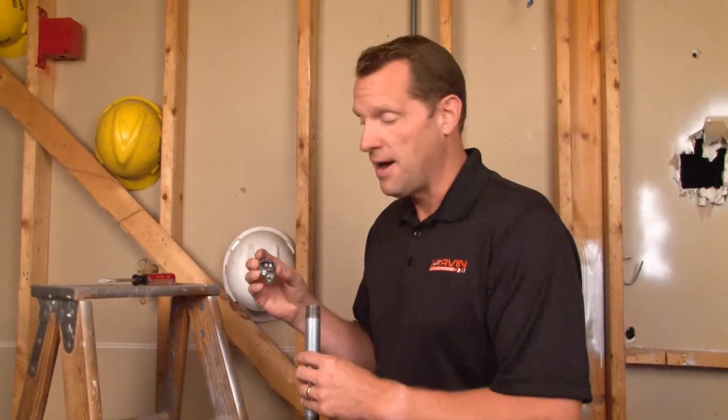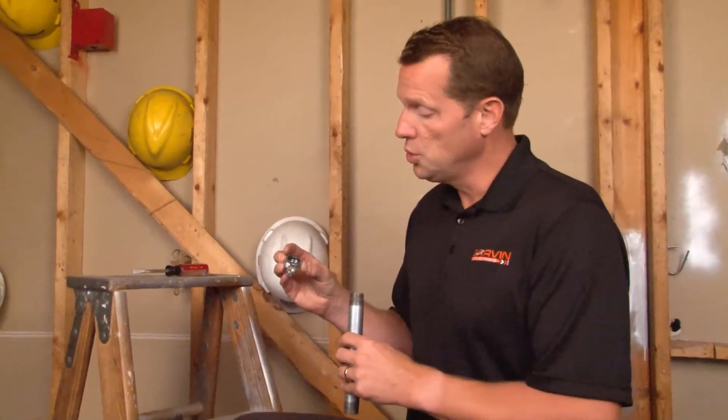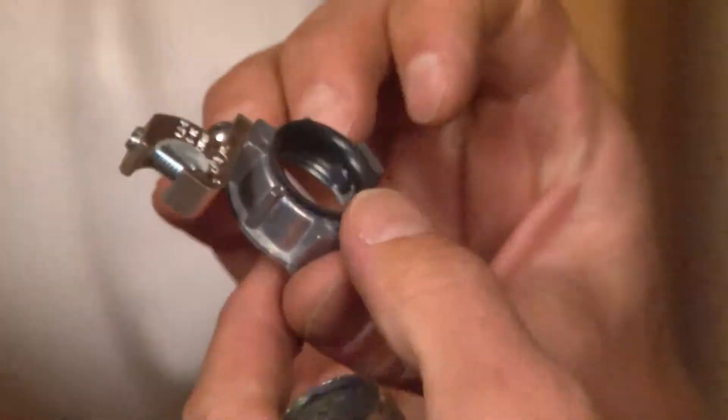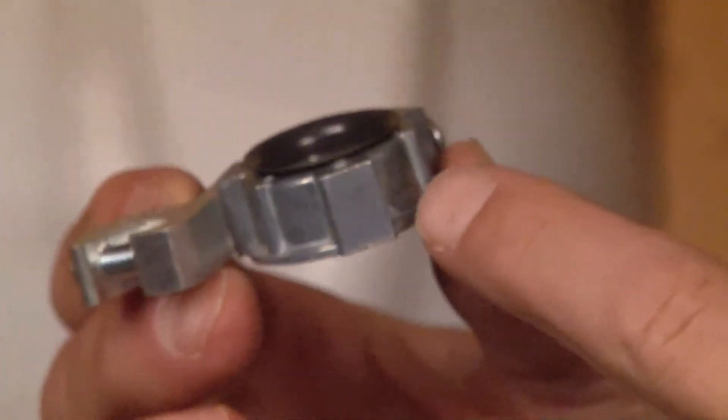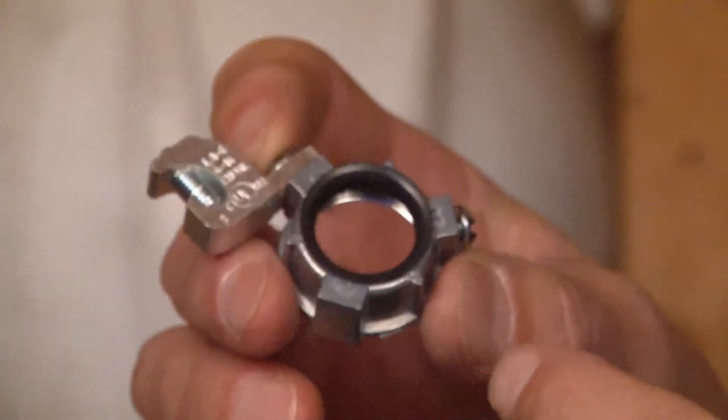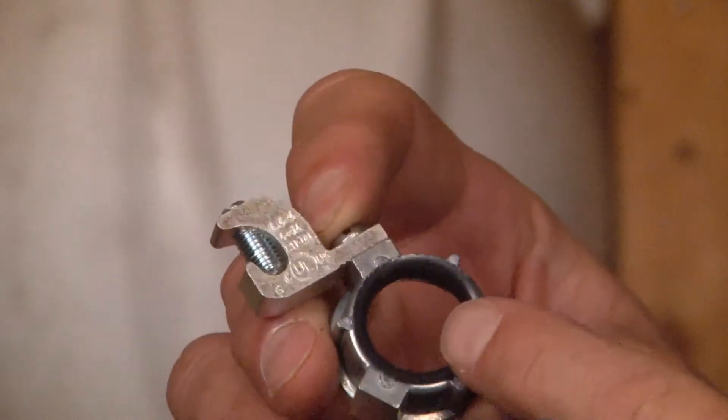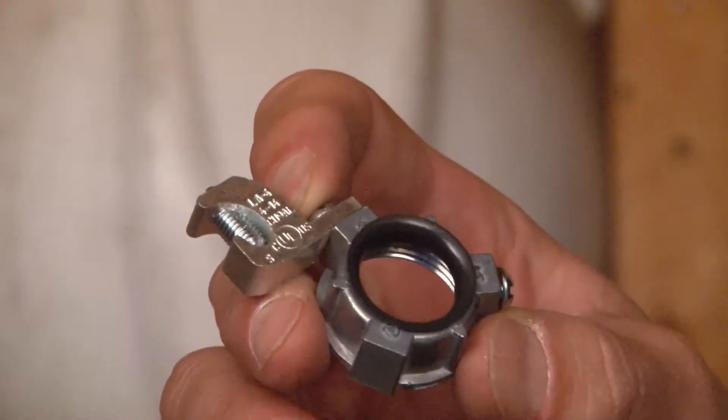Part number UGB75 is a three-quarter inch universal grounding bushing. As you can see, this part is made from heavy-duty cast metal and comes with an insulated liner where the wires pass through the bushing.